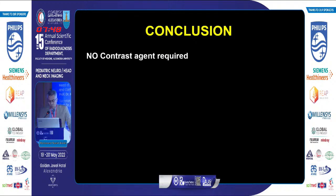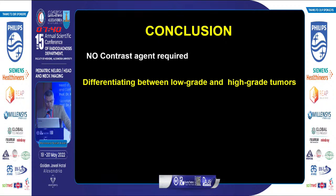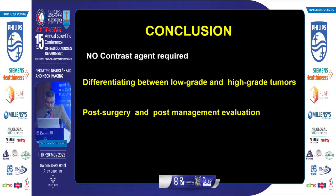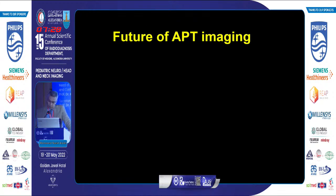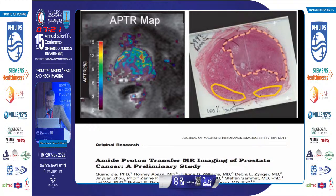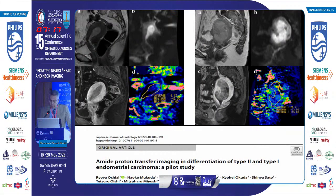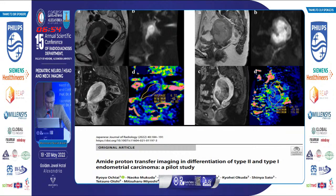To conclude, amide proton transfer weighted imaging is a non-contrast-based technique. It can be used to differentiate low from high-grade neoplasm, post-irradiation necrosis from tumor recurrence, and to monitor the tumor's response to chemotherapy. There are also articles on its use in other oncologic applications such as assessment of prostatic adenocarcinoma, differentiating type 1 and type 2 endometrial carcinoma, and non-oncologic applications such as assessment of ischemic brain injury or staging of intracerebral hemorrhage. Amide proton transfer is a promising technique and will take its place soon in radiological practice.